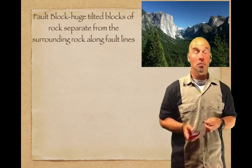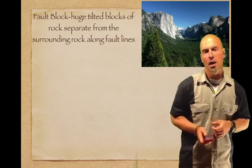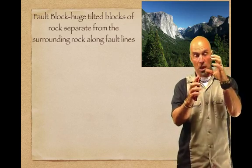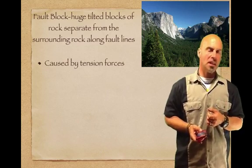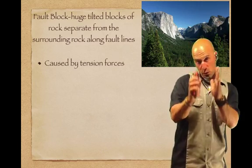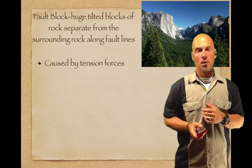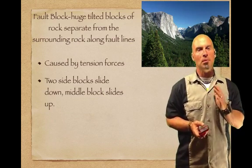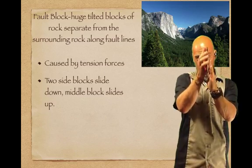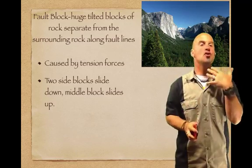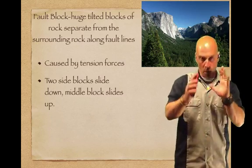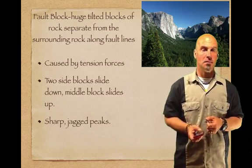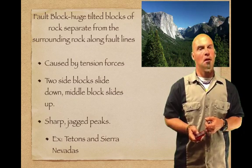Fault block mountains are huge, tilted blocks of rock separated by surrounding rock along their fault lines — think of great big Lego blocks. These are caused by tension forces operating on each block individually. The two side blocks slide down while the middle block slides up, creating really sharp, jagged peaks. The Tetons and the Sierra Nevadas are examples of fault block mountains.